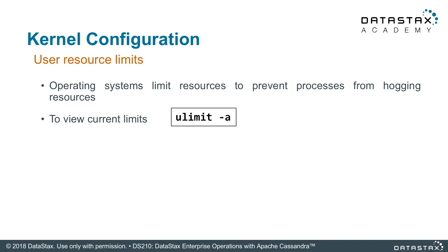General purpose operating systems like Linux have resource limits to prevent a user from hogging all the resources. You can investigate these limits using the ulimits command. For nodes running Apache Cassandra, we do want to let Cassandra processes have unfettered access to all resources on the machine. We can turn off these limits by editing the limits.conf file.